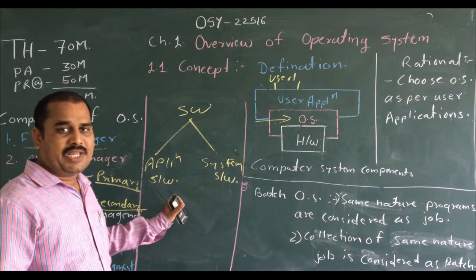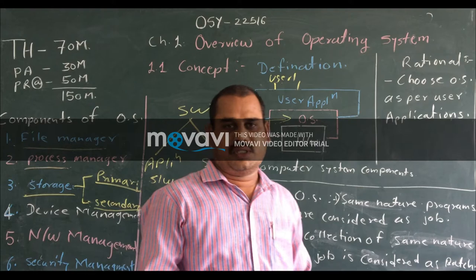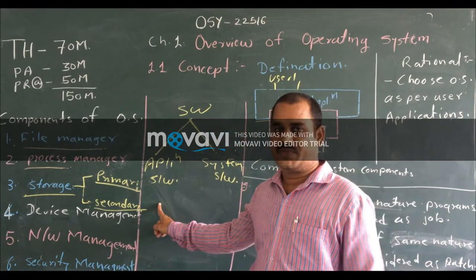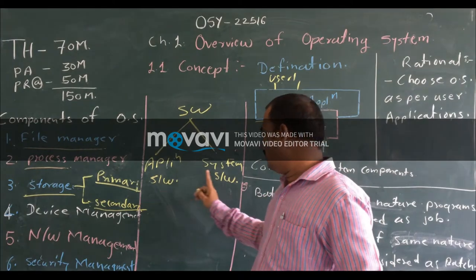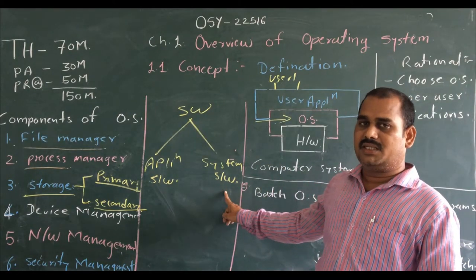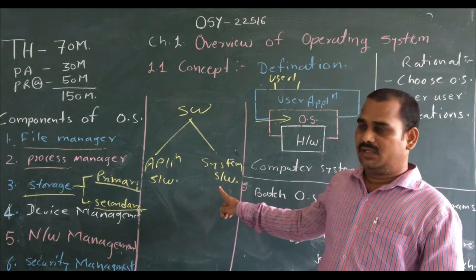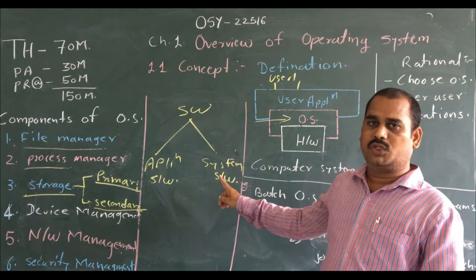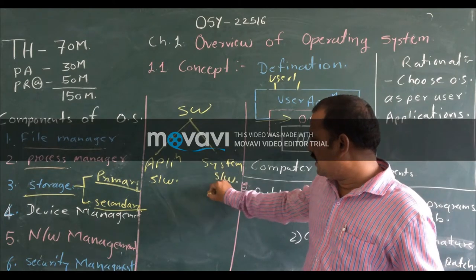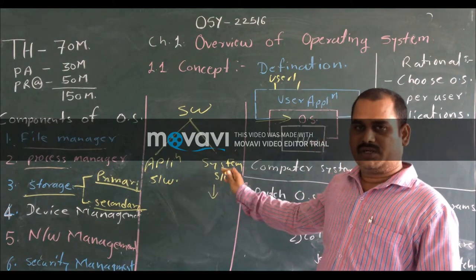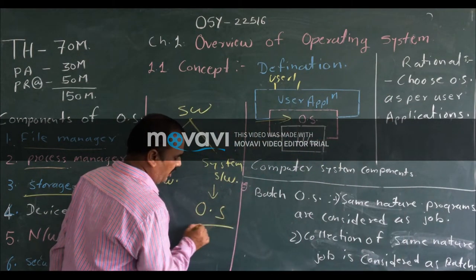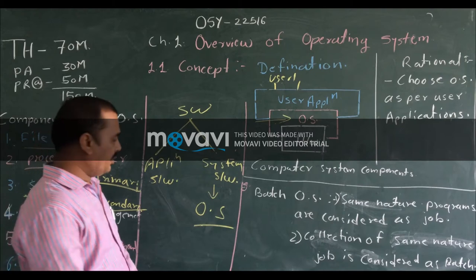Application software is the software which fulfills the user applications. System software is the software which assists the system itself — it provides a suitable environment for executing the system. So we can say that system software is nothing but the operating system.